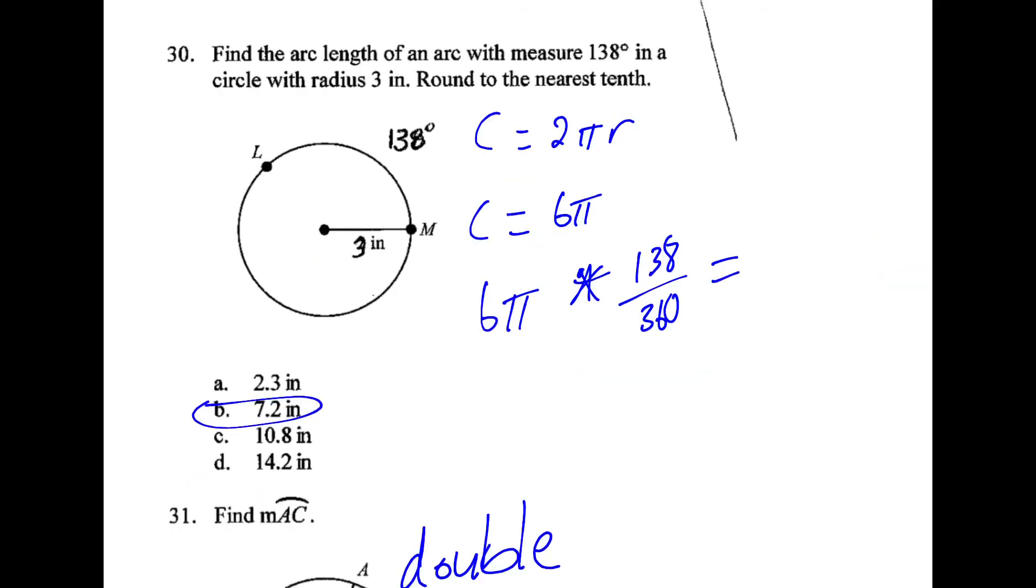For 30, arcs are about the circumference. So the circumference here is 6 pi. And we're going to multiply that by a fraction of the total circle, 138 divided by 360. If we do that, we get b.